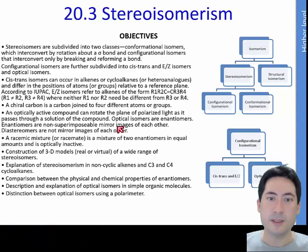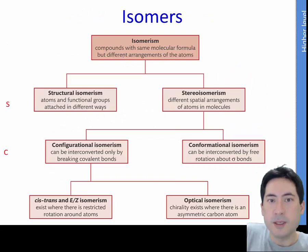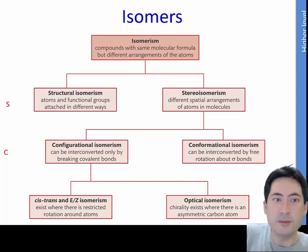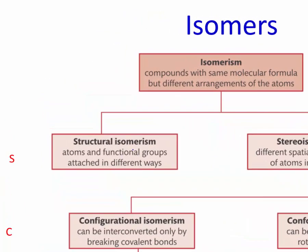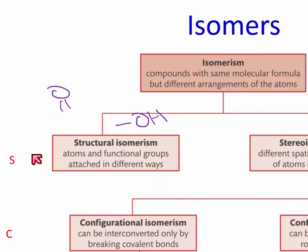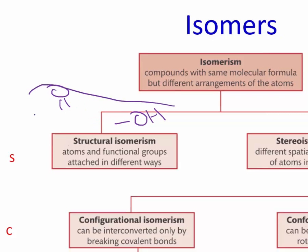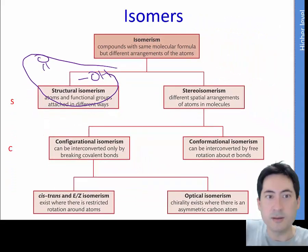Stereo isomerism, section 20.3. Here we have isomerism — molecules are different because of different arrangements of atoms. This could be completely different structural groups, for example the oxygen in an OH form, a hydroxyl form, or a carbonyl form. Those would be completely different molecules altogether.